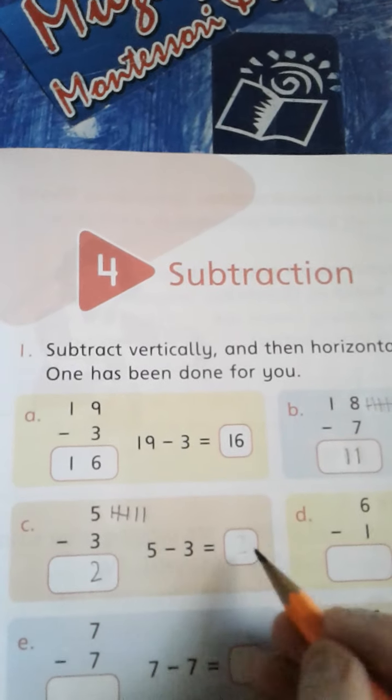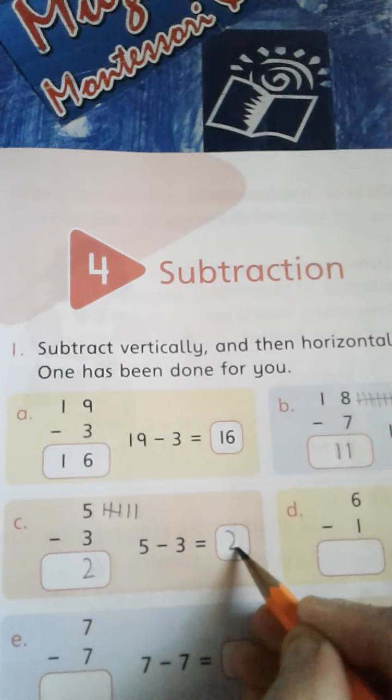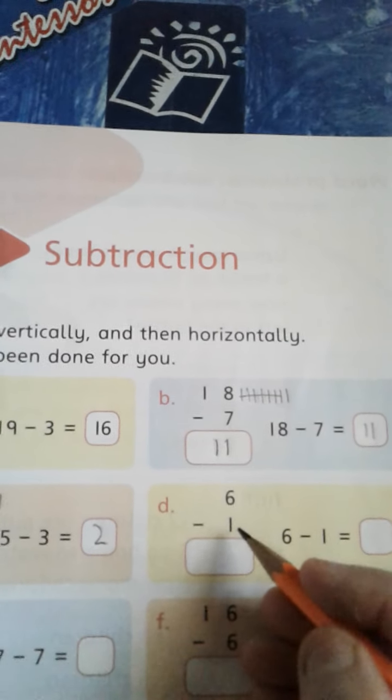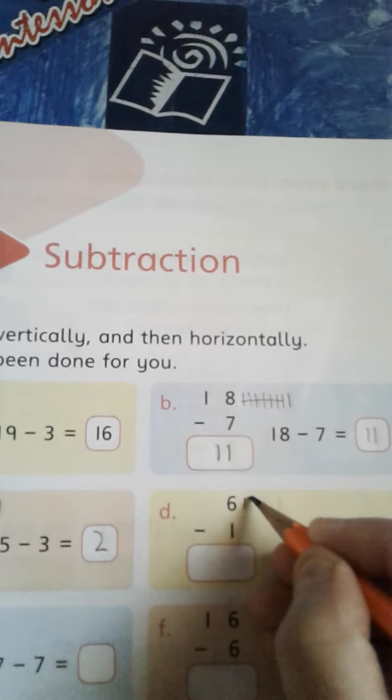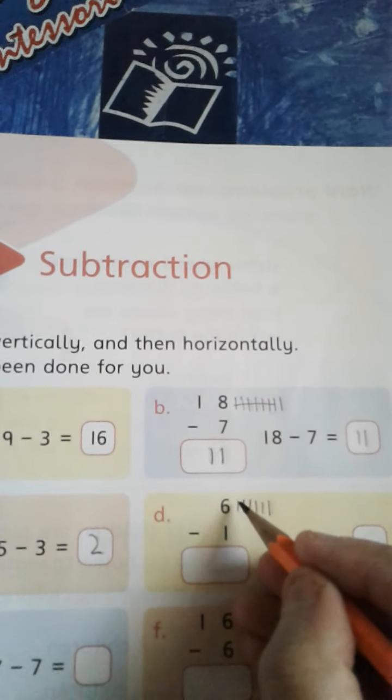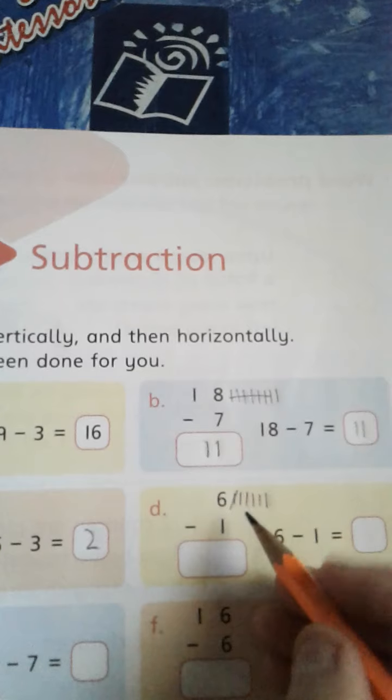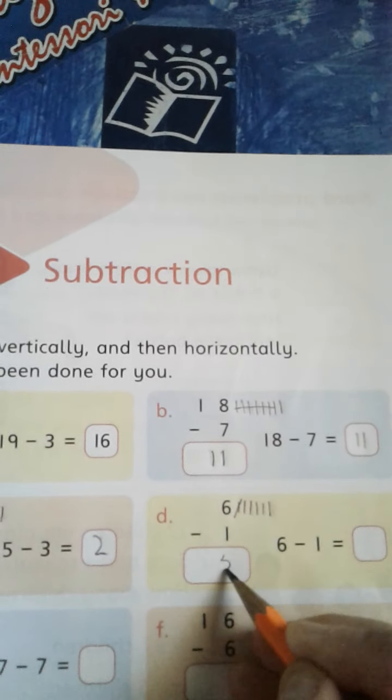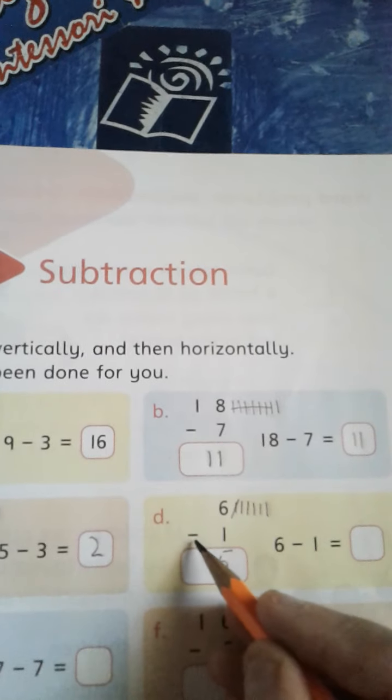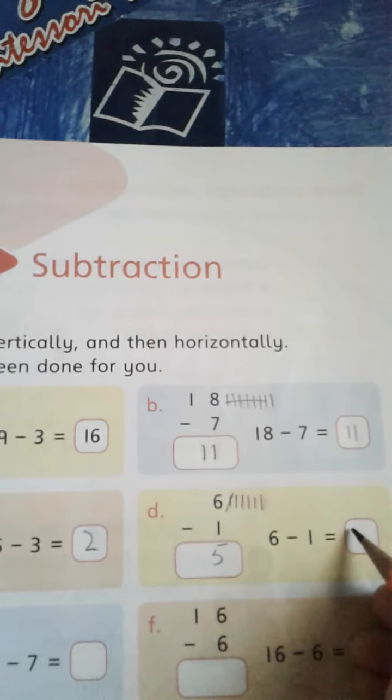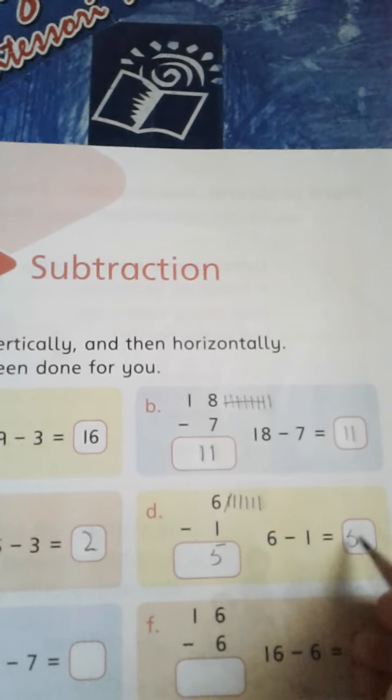Same, 5 minus 3 is equal to 2. Next is 6 minus 1. Draw 6 lines: 1, 2, 3, 4, 5, 6. And we have to subtract or minus just one number. How many numbers are left? 1, 2, 3, 4, 5. So it means 6 minus 1 is equal to 5, same 6 minus 1 is equal to 5.